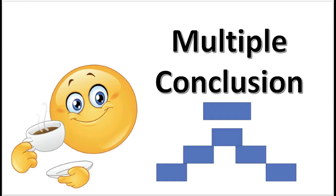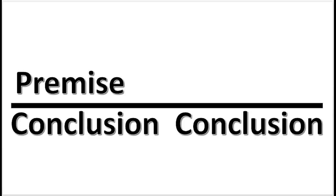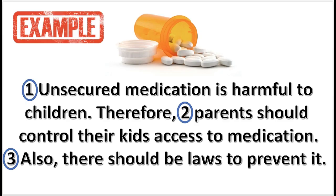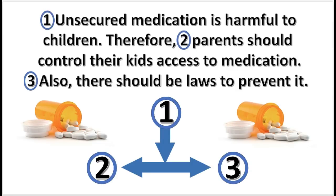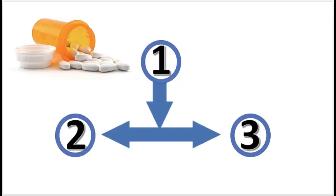The last basic pattern is called multiple conclusion. This pattern is used when a single premise supports two or more conclusions. Such an occurrence results in multiple arguments, but we can diagram them as if they were a single argument. The diagram asserts that statement 1 supports both statements 2 and 3.